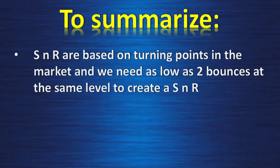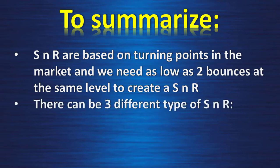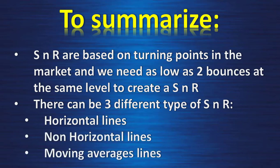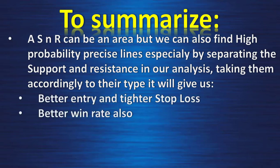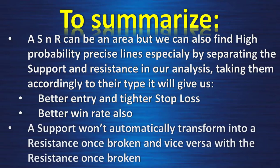To summarize: support and resistance are based on turning points in the market, and we need as few as two bounces at the same level to create a support or resistance level or area. There can be three different types: horizontal lines, trend lines or non-horizontal lines, and moving average lines. A support and resistance can be an area, but we can also find high-probability precise lines — especially by separating the support and resistance in our analysis. Taking them accordingly to their type will give us better entries, tighter stop losses, and a better win rate. A support won't automatically transform into a resistance once broken, and vice versa with the resistance once broken.